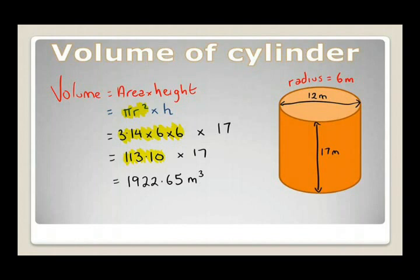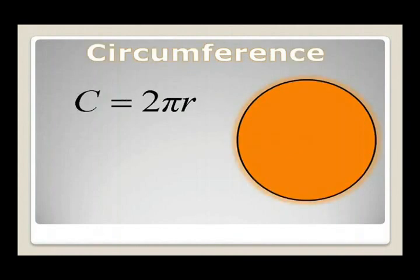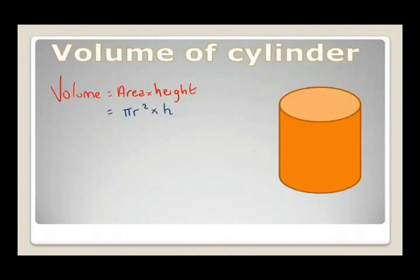To sum it all up: the area of a circle is πr², where pi is 3.14 and r is the radius. The circumference of a circle (the perimeter) is 2πr. The volume of a cylinder is the area πr² times the height. If you can work those out, you should do well with circular shapes. Good luck with that.